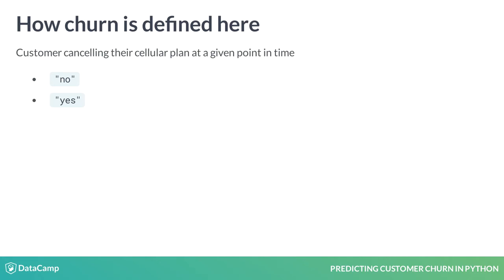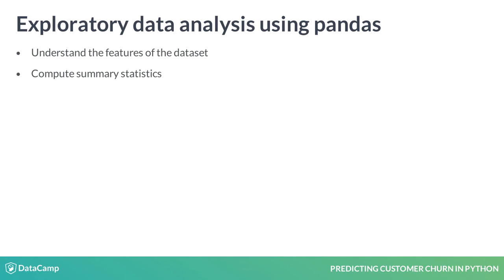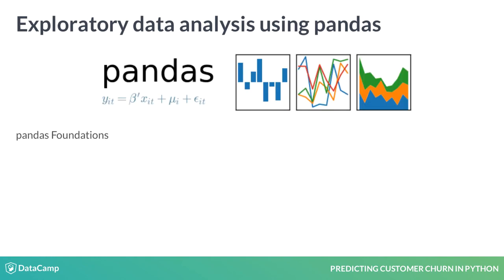In the following interactive exercises, you will begin to interact with the data to gain a basic understanding of its features and data types. You will also compute summary statistics to get a sense for how the data is distributed. To do this, you will use Pandas methods you may already be familiar with from other DataCamp courses, such as Head, Describe, and Mean.